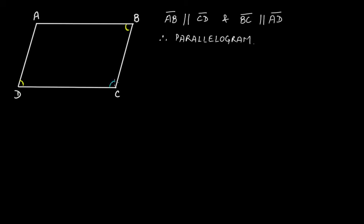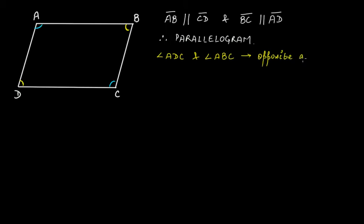These two pairs are the pairs of opposite angles. Angle ADC and angle ABC are one pair of opposite angles. Angle DCB and angle DAB are another pair of opposite angles.